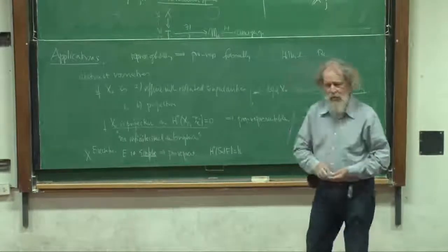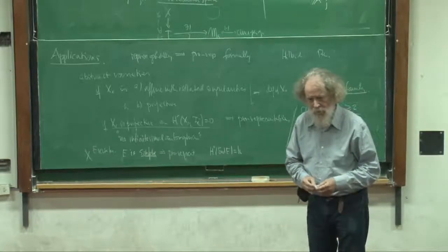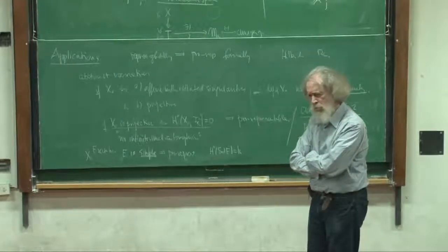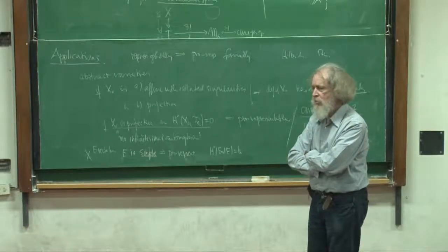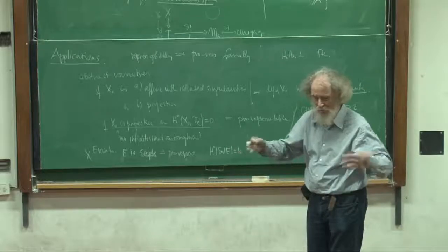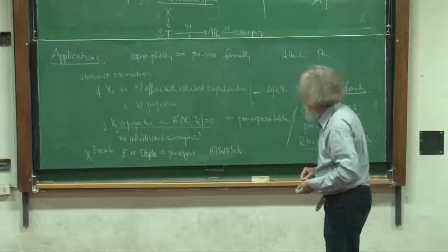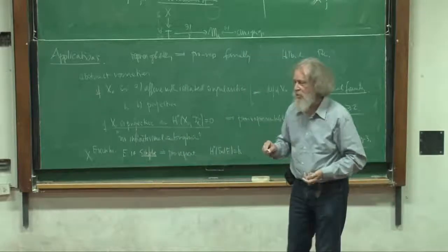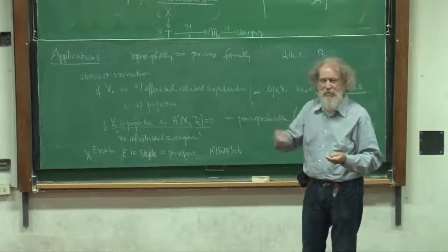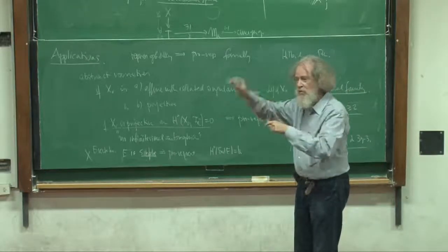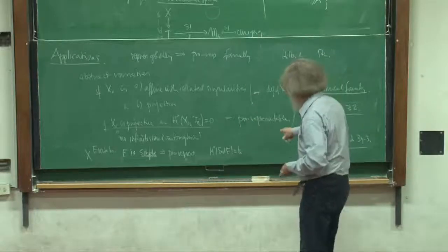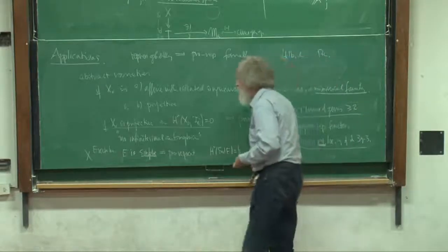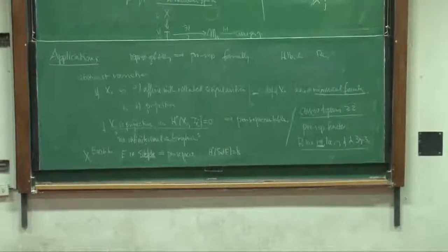The hypothesis H^0(T_{X_0}) = 0 — no infinitesimal automorphisms — means the automorphism group scheme is étale. For elliptic curves there's a problem: an elliptic curve has a one-parameter family of automorphisms. But if you fix a point, that kills the group of automorphisms. So for elliptic curves with a fixed point, this also applies. Now let me give you one example of a coarse moduli that you can understand completely: curves of genus 0. Over an algebraically closed field, any nonsingular curve of genus 0 is isomorphic to P^1 — it's the only one.